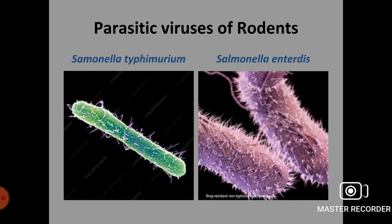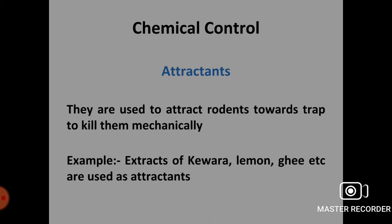Under chemical control, we can use various types of chemicals — solid, liquid or gas — used to kill rodents. These chemicals are called rodenticides. The use of rodenticides is a very common and effective method of controlling rodent population. The various types of rodenticides used are attractants, repellants, killers, chemosterolants and fumigants.